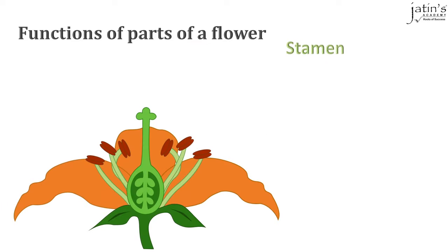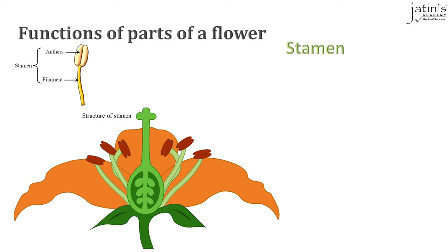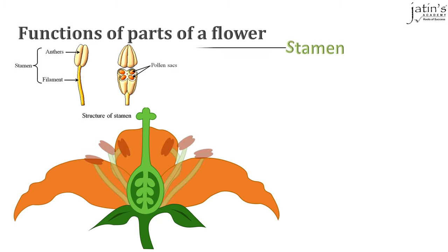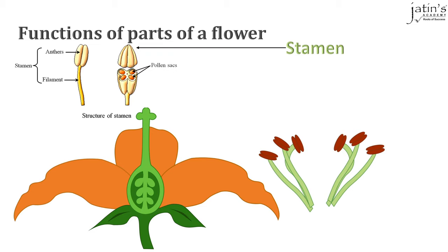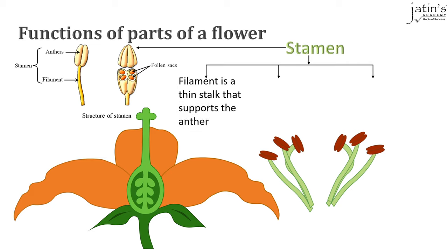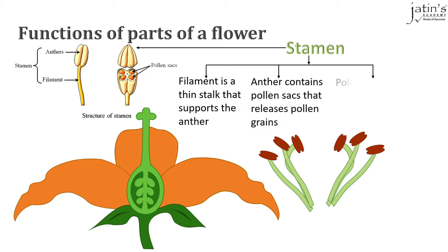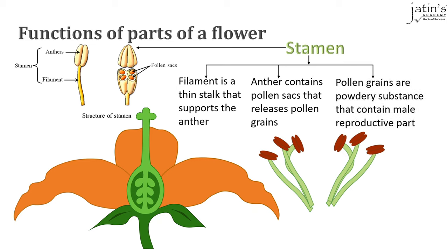Next we come to the male part of the flower, the stamen. It contains the anther and the filament. The filament is the thin stalk that supports the anther. The anther contains the pollen sacs that release the pollen grains when they are ripe. Pollen grains are powdery substances inside the pollen sac which contain the male reproductive cells.